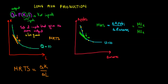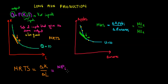We're giving up capital relative to labor, and we're getting one more unit of labor. In exchange, we're getting additional production — the marginal production from that one more unit of labor. And we are giving up the marginal production that we could have gotten from an additional unit of capital. So we are increasing labor by one unit, getting its marginal production, and giving up some capital, foregoing the production we could have had from it.